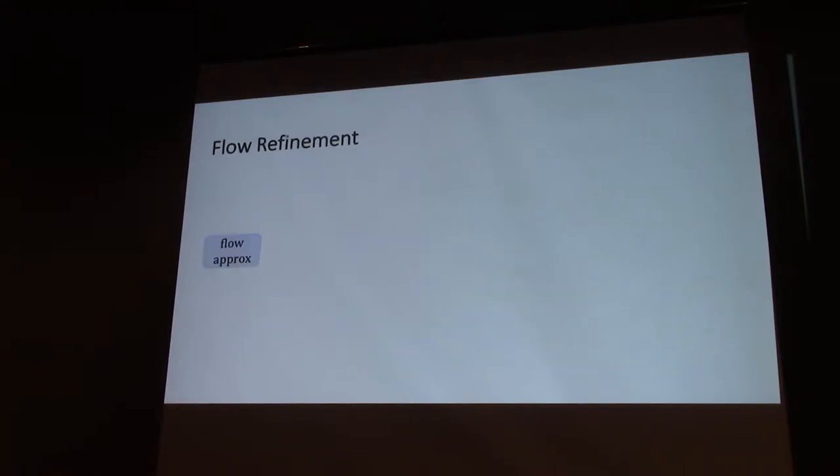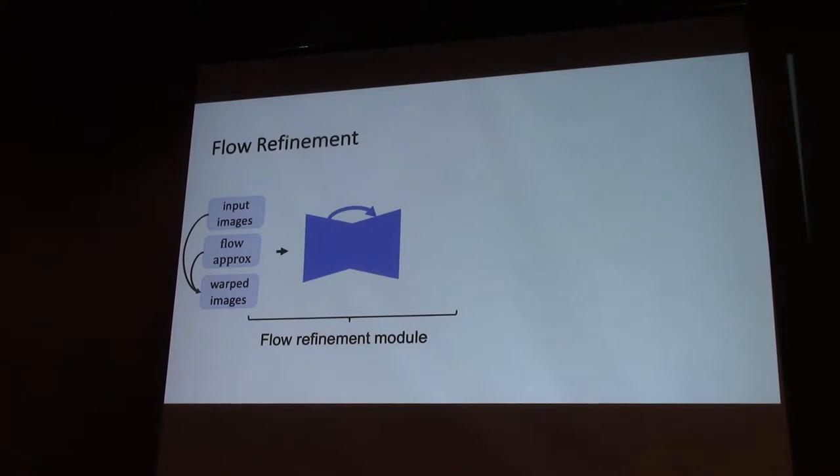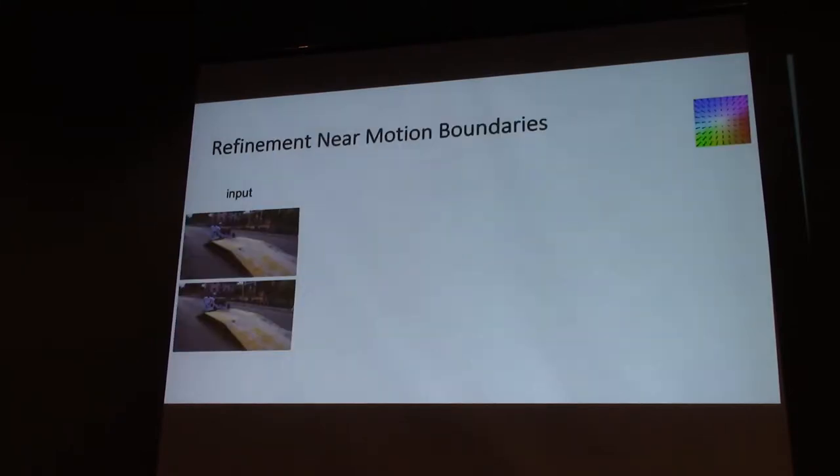How can we solve this problem? We can have another neural network which takes initial flow approximation and input images, and also warped input images using the initial approximation. By warping I mean moving the pixels to certain positions defined by optical flow, because optical flow essentially is correspondences between input images. We feed them into another neural network and we can get refined optical flow.